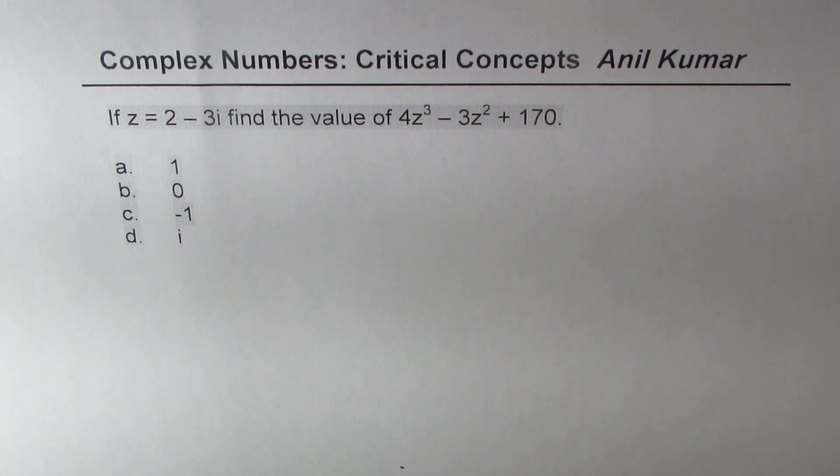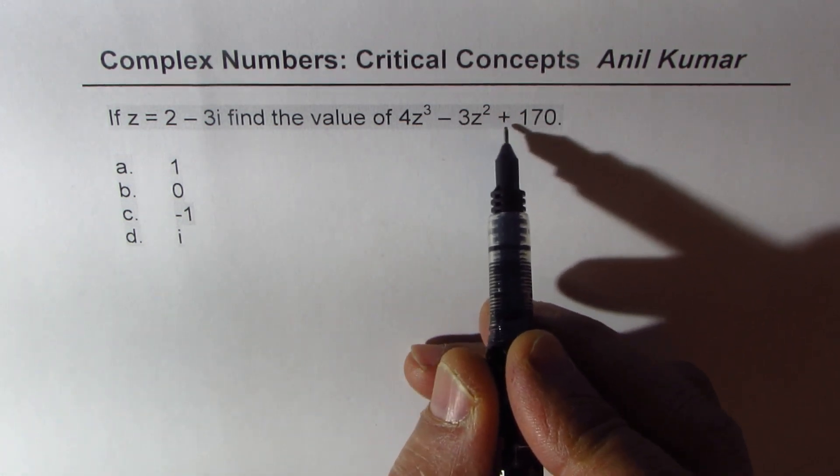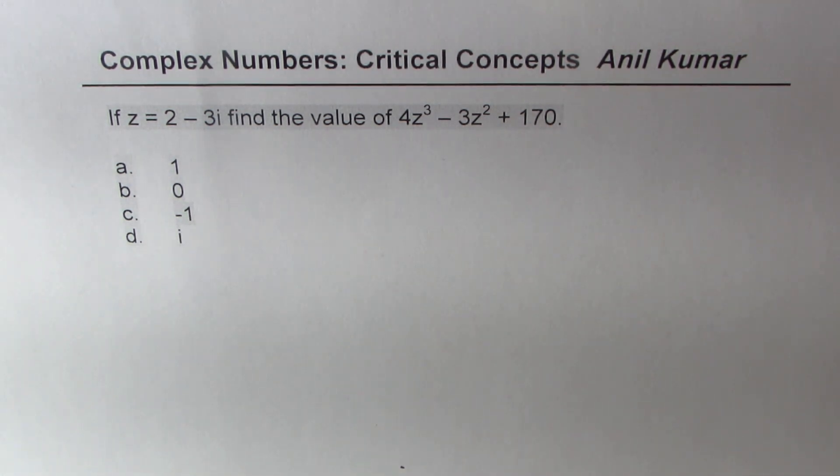Find the value of 4z³ - 3z² + 170. Four options are given to you. In advanced level mathematics or university first-year mathematics you can have these kinds of questions. Now let us see how to solve such a question.